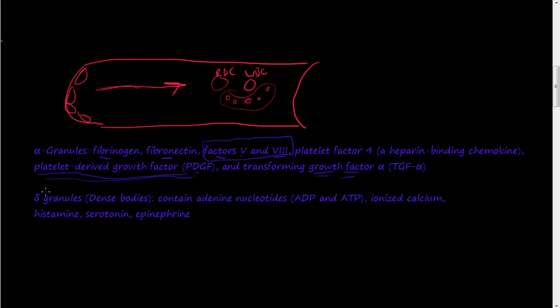They have these gamma granules, or they're called dense bodies. They contain adenine nucleotides, ADP and ATP. They contain ionized calcium, histamine, serotonin, and epinephrine.